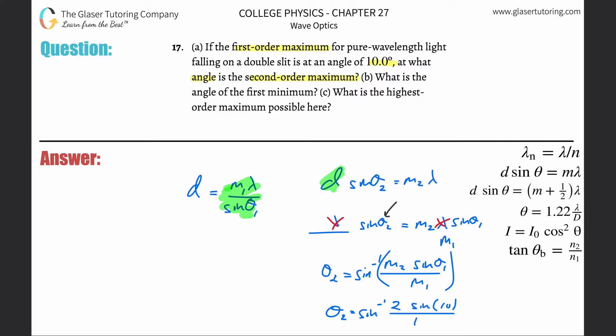Plugging in: θ₂ = arcsin(2 × sin10° / 1). That gives approximately 20.3 degrees. So the second order maximum is at 20.3 degrees.